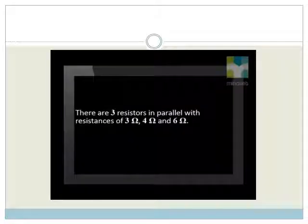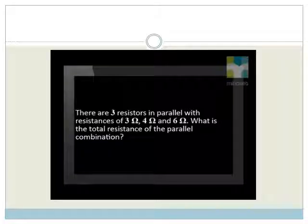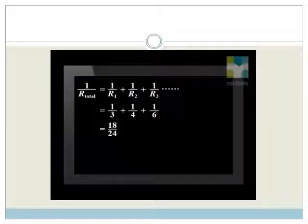Let's look at an example. There are three resistors in parallel with resistances of 3 ohm, 4 ohm, and 6 ohm. What is the total resistance of the parallel combination? Let's substitute this information into our equation.